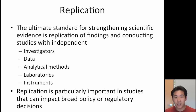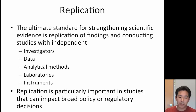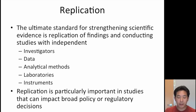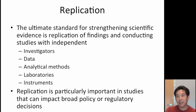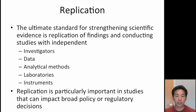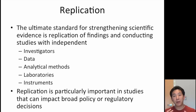So the ultimate standard in strengthening scientific evidence is replication. The goal is to have independent people do independent things with different data, different methods, and different laboratories and see if you can get the same result. Because if a finding is robust to all these different things, then it's more likely to be true and the evidence is stronger in its favor. Replication is particularly important in studies that have big policy impacts or influence regulatory decisions.